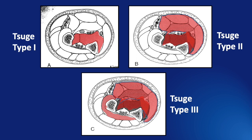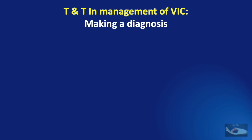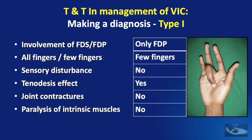Let us see some tips and tricks in understanding the clinical features of Volkmann's ischemic contracture and the different types. It is very important to make a correct diagnosis and an accurate understanding of the basic pathology, because it is going to form the basis of our management. A simple trick would be to analyze the following criteria: if there is involvement of only the FDP involving a few fingers with no sensory disturbances, a tenodesis effect, no joint contractures, and no paralysis of intrinsic muscles, it is a type 1.